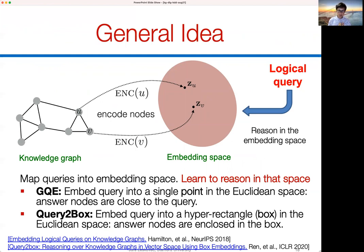Our main idea is to answer these queries in the embedding space. We embed the knowledge graph into an embedding space, decompose the logical query into operators, and these operators act directly on the embedding space. We want to learn the structure of the embedding space so we can move around it and perform logical operations. We pioneered this in our graph query embeddings work, where we embedded a query as a single point in Euclidean space. We later expanded this with Query2Box, where a query is embedded as a box — a hyper-rectangle — and answers are nodes inside the box.